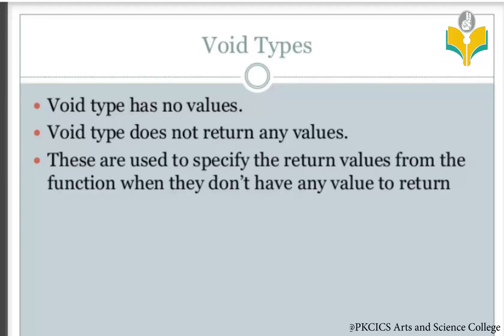Void is used to specify the return type from a function when it does not have any value to return. The void data type means nothing is returned.